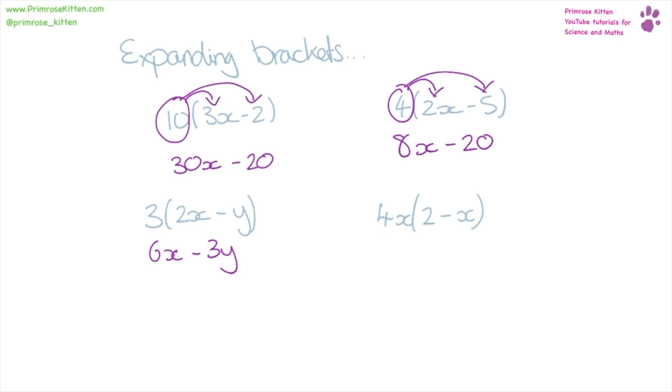4x outside the brackets, 2 minus x inside the brackets. So 4x times 2 gives us 8x. 4x times minus x gives us minus 4x squared.